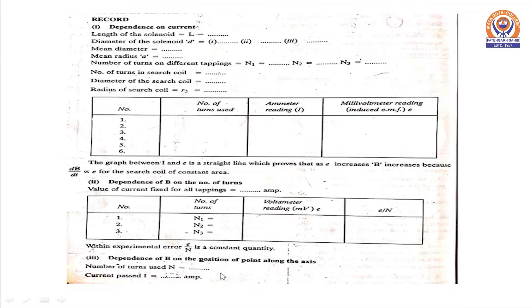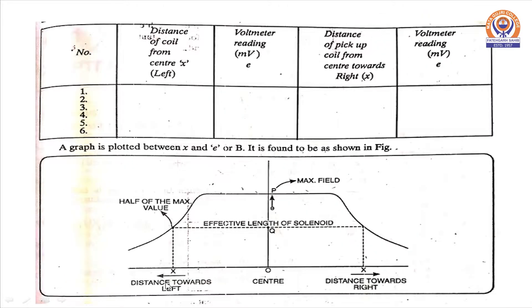In the third part, dependence of B on the position along x-axis will be studied. For that, number of turns n will be kept constant. Current passed i will be kept constant and reading will be taken by taking the distance from the center of the coil towards left side.